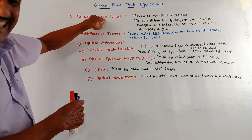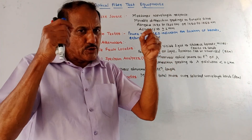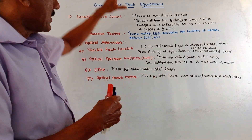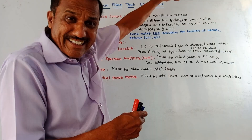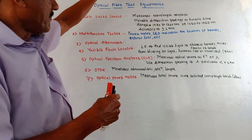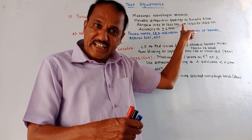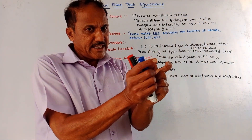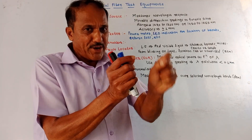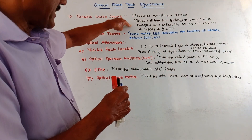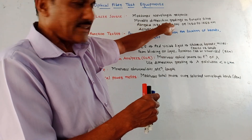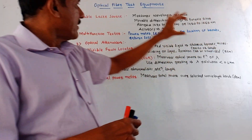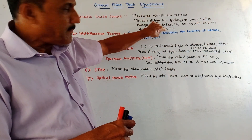First is tunable laser source. As the name indicates, it is a tunable laser source, meaning we can adjust the wavelength of the laser source. It measures the wavelength response of optical cable. It has movable diffraction gratings which act as a tunable filter, so we can select a particular point where we want to measure the wavelength. The range is 1280 to 1330 nanometers or 1450 to 1565 nanometers. Accuracy is around plus or minus 1 nanometer.